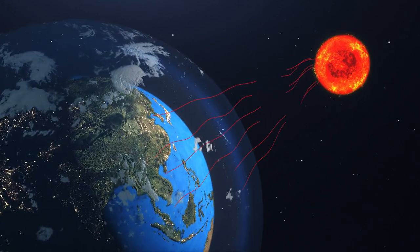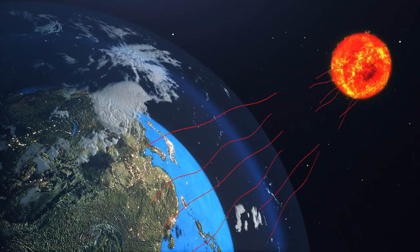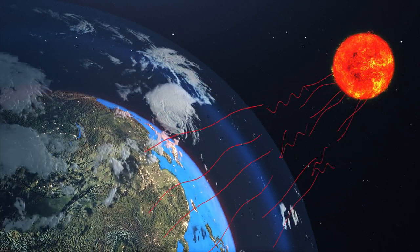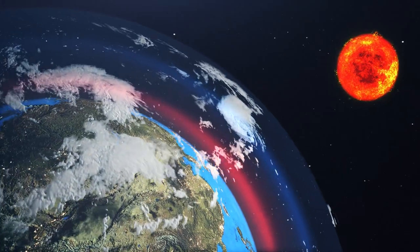About half of the sunlight reaching the Earth's atmosphere passes through air and clouds to the surface, where it is absorbed and then radiated upward in the form of infrared heat.